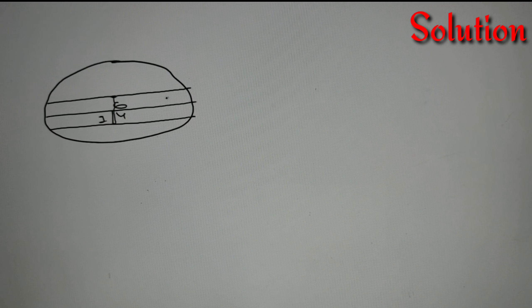then according to the property of the circle, this perpendicular will bisect these chords. So if this is 6 and this is 4, I can say that this is 2 and this is 3.